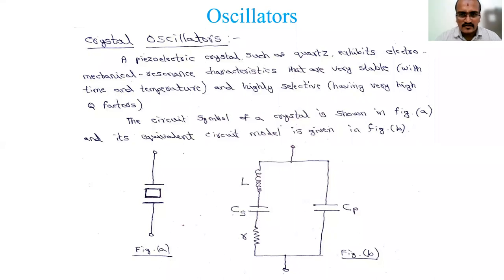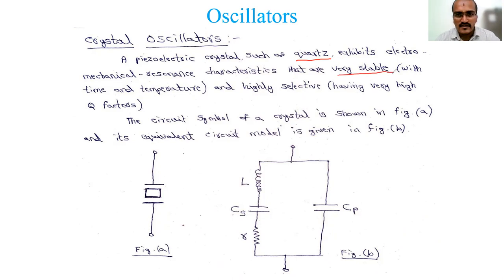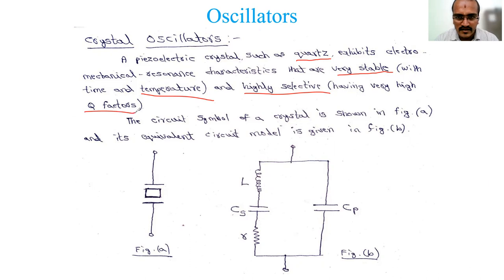A piezoelectric crystal such as quartz - as used in watches for synchronization - exhibits electromechanical resonance characteristics. The Colpitts oscillator has a drawback of frequency instability, but a crystal is very stable with changes in time and temperature. It is also highly selective, having very high Q factors. We have already studied Q factors for inductors and capacitors in the resonance section.